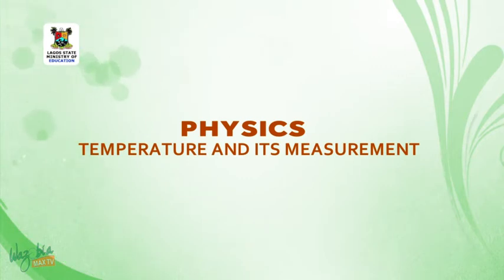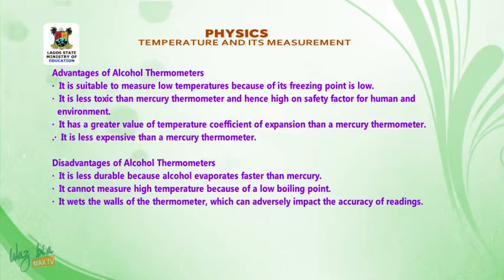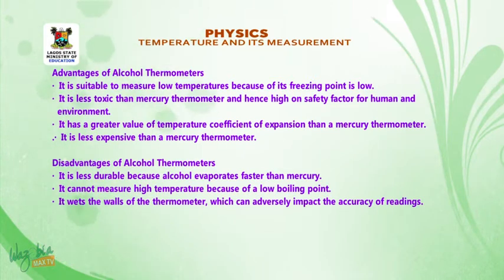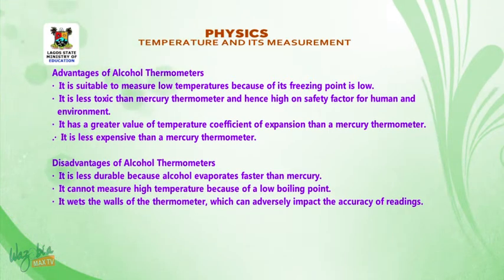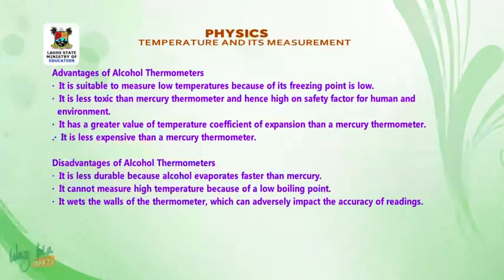Advantages of alcohol thermometer: 1. Suitable to measure low temperatures because its freezing point is low. 2. Less toxic than mercury thermometer, providing a higher safety factor for users and environments. 3. Has a greater value of temperature coefficient of expansion than mercury. 4. Less expensive than a mercury thermometer. Disadvantage: 1. Less durable because alcohol evaporates faster than mercury. 2. Cannot measure high temperatures due to its low boiling point. 3. It wets the walls of the thermometer, which can adversely impact accuracy.